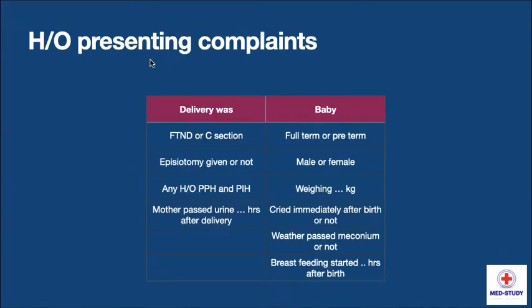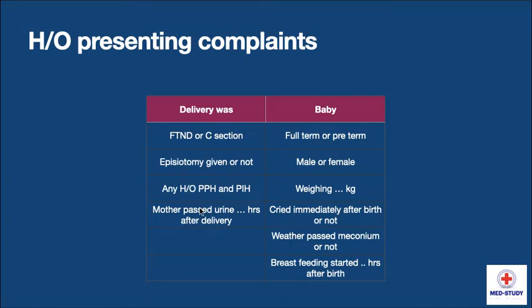Now coming to details of history of presenting complaint, we have to take the details of delivery as well as the status of the baby. In details of the delivery, we have to know whether it was a full term normal delivery or C-section, whether episiotomy was given or not, any history of postpartum hemorrhage or pregnancy induced hypertension, and whether the mother passed urine and after how many hours of delivery.